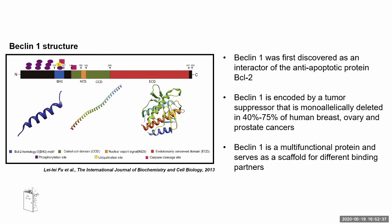Beclin-1 was first discovered as an interactor of the anti-apoptotic protein Bcl-2. Importantly, Beclin-1 is encoded by a tumor suppressor that is monoallelically deleted in 40 to 75 percent of human breast, ovary, and prostate cancers. Beclin-1 is actually a multifunctional protein and serves as a scaffold for different binding partners, not only regulating autophagy but playing a role in many other processes as a key checkpoint.